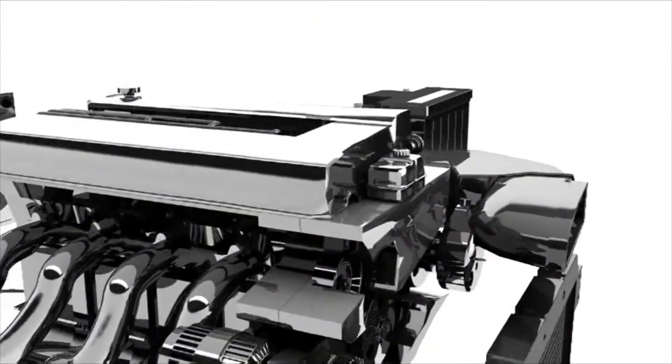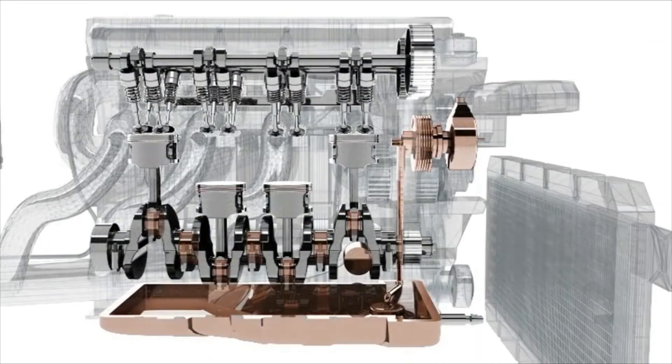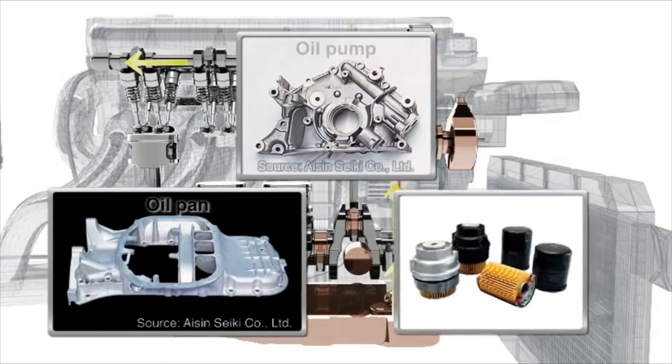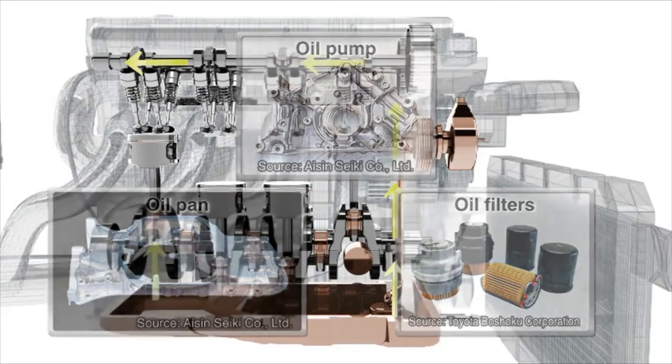With metal surfaces constantly rubbing against each other in an engine, the lubrication system delivers the oil needed to properly cool and lubricate its parts. The engine powers the oil pump to suck out the oil in the sump of the pan, distributing it throughout the engine.